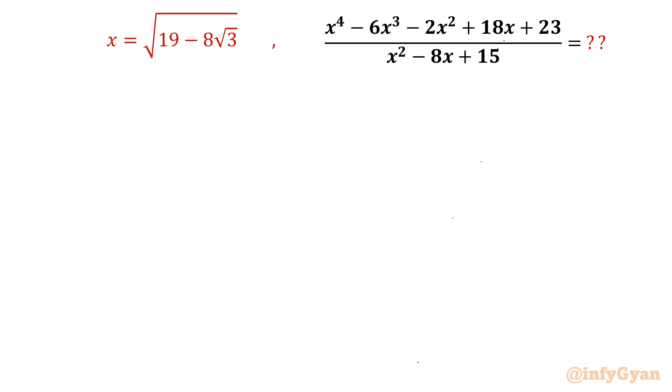If x is known to be square root of 19 - 8√3, we have to simplify this one. This question is from Math Olympiad 2007 junior paper. So let's get started.